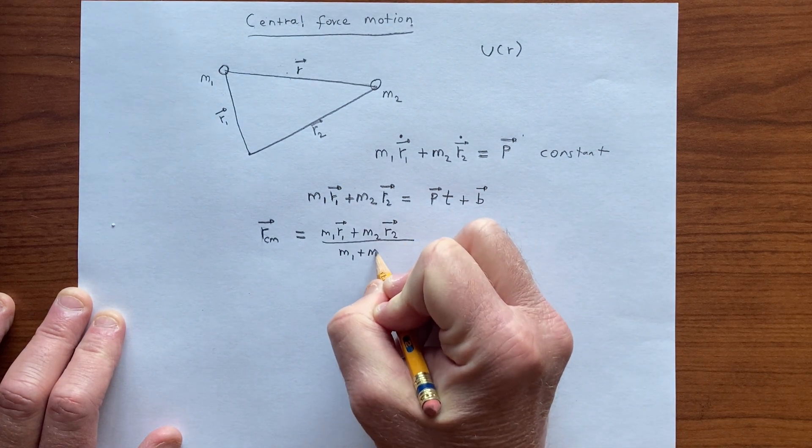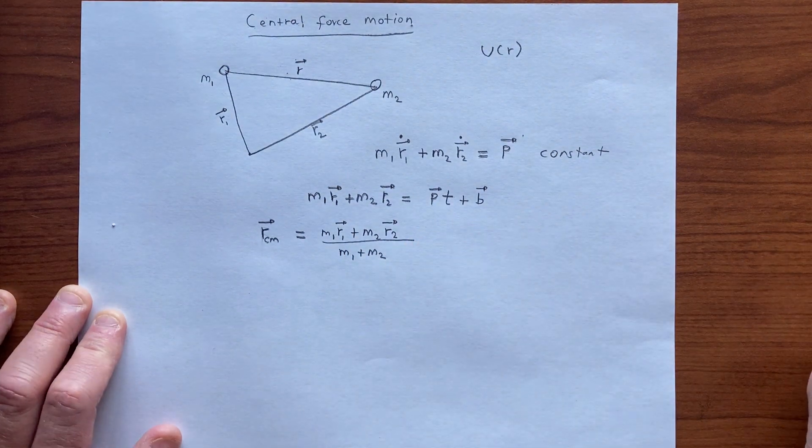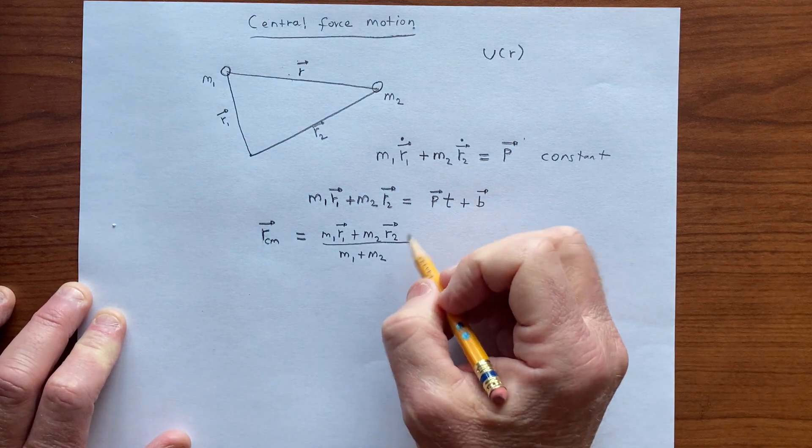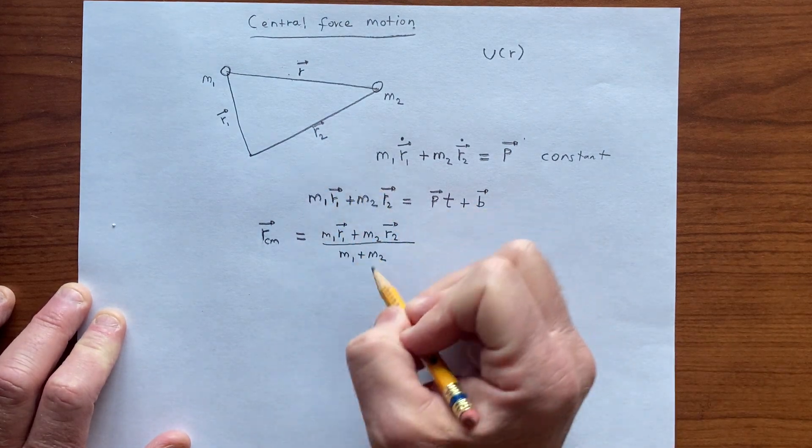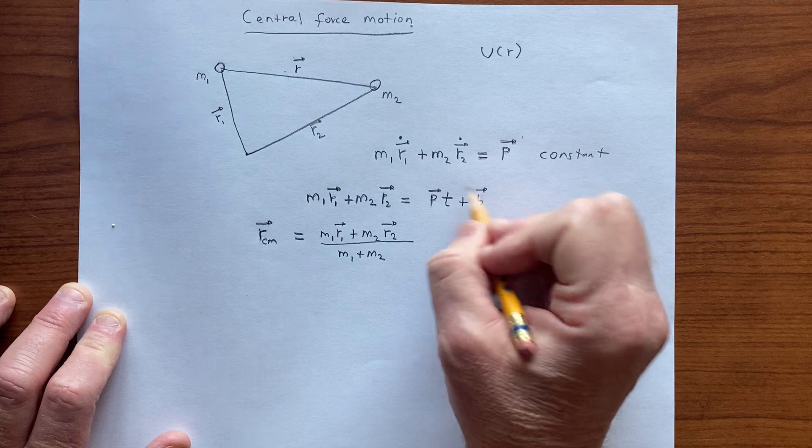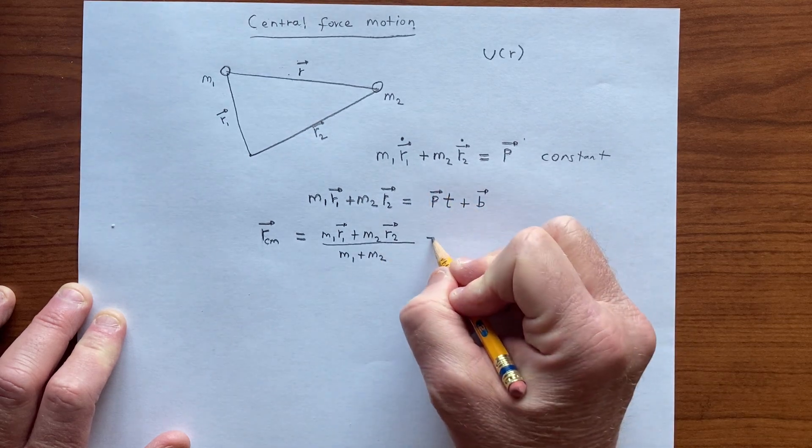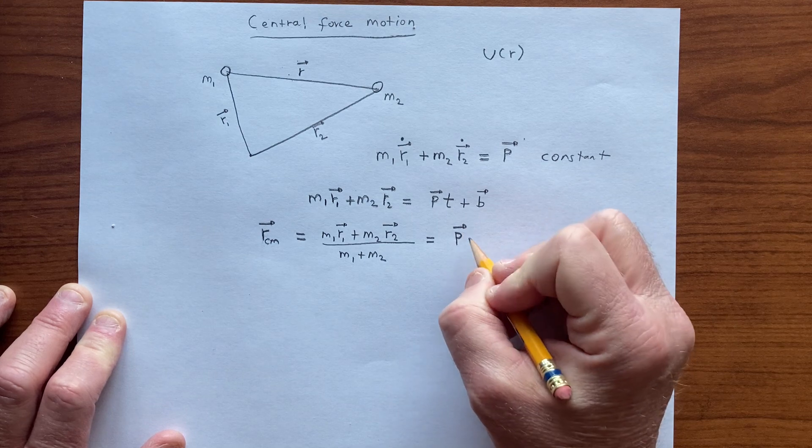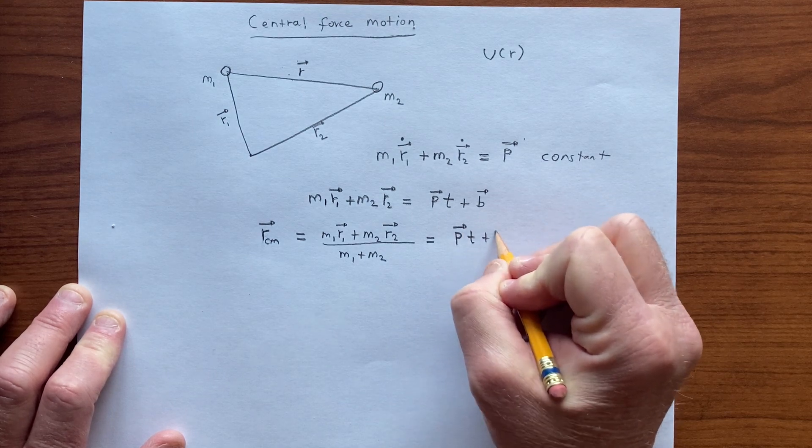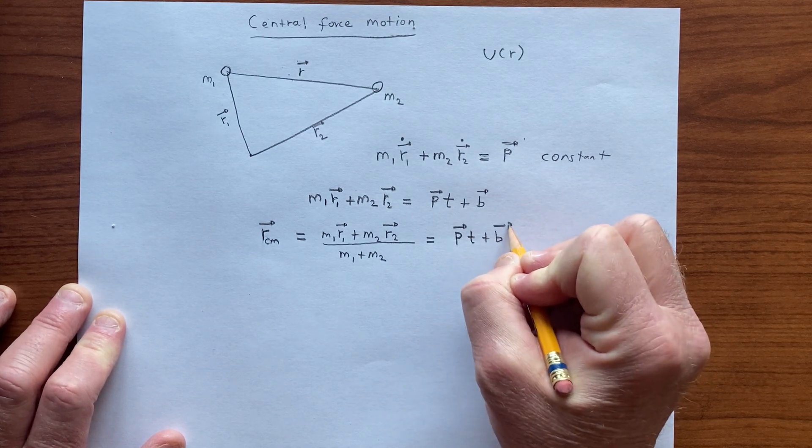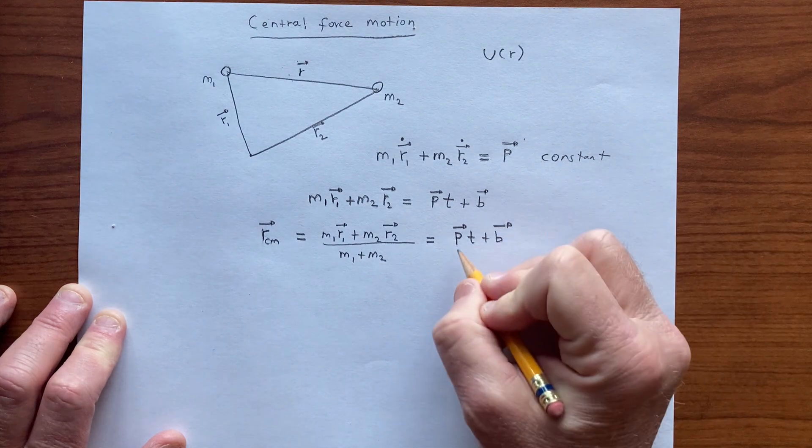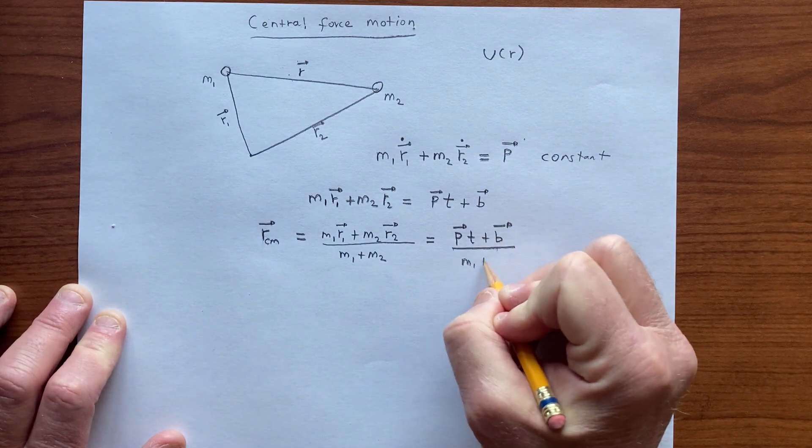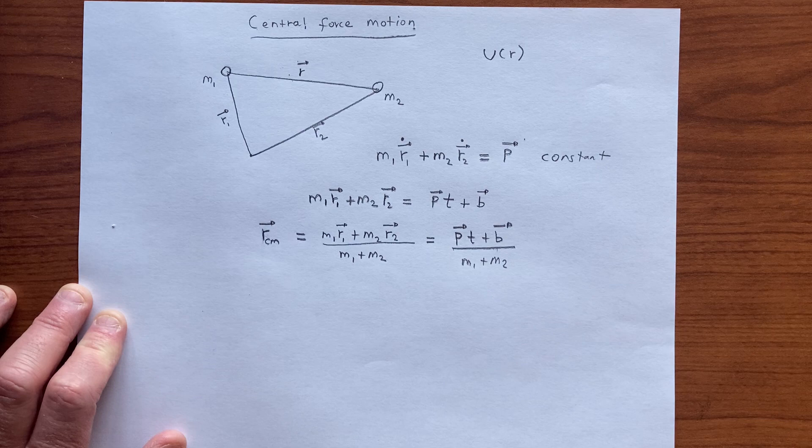over m1 plus m2, and therefore we're dividing this by that, which is the same thing as this divided by that, so it must be true that the center of mass is pt plus b over m1 plus m2, the sum of the masses.